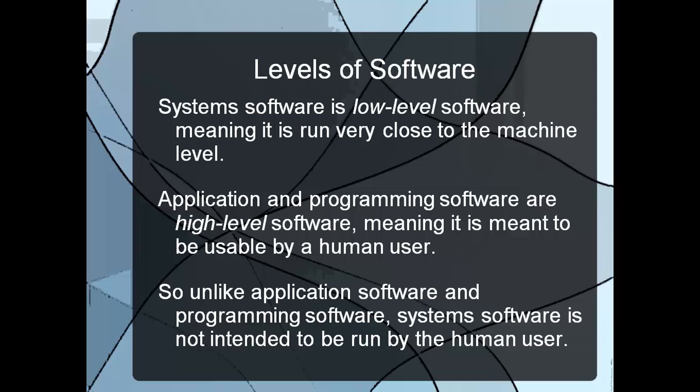The last thing to discuss is the different levels of software. Software is broken into either low-level or high-level. Low-level means it runs where the computer understands it — very simplistic, basic code that the computer can understand, but very difficult for most people to read. Application and programming software are much higher-level, meaning the average user can use them — simple and straightforward. Unlike application and programming software, system software is not intended to be run by the human user, so system software is very low-level, while applications and programming software are higher-level.